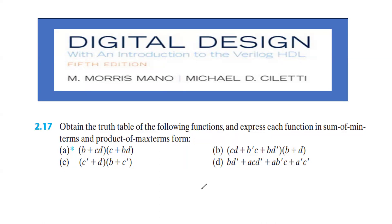Hello friends. In this video we will discuss a problem from the Digital Design textbook by M. Morris Mano. The question number is 2.17 from the exercises: obtain the truth table of the following functions and express each function in sum of minterms and product of maxterms form. For each boolean function, first we should develop the truth table, then write sum of minterms and product of maxterms from the truth table.